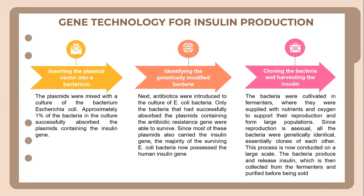The next step is identifying the genetically modified bacteria. Antibiotics were introduced to the culture of E. coli bacteria. Only the bacteria that successfully absorbed the plasmid containing the antibiotic-resistant gene were able to survive. Since most of these plasmids also carried the insulin gene, the majority of the surviving E. coli bacteria now possess the human insulin gene.